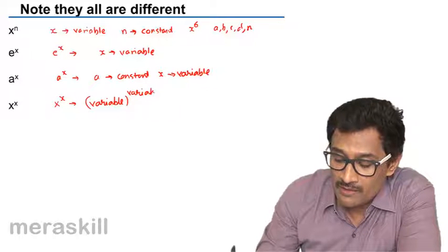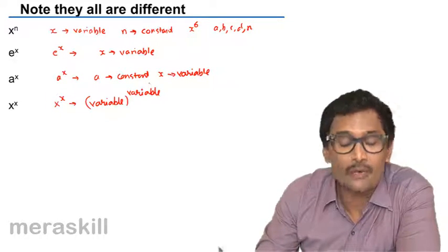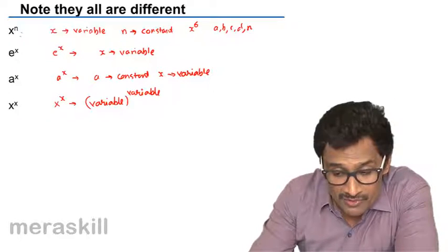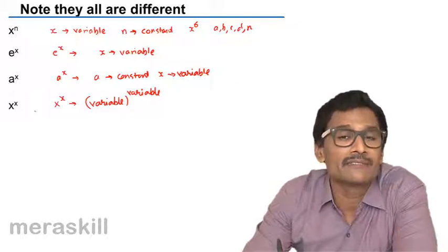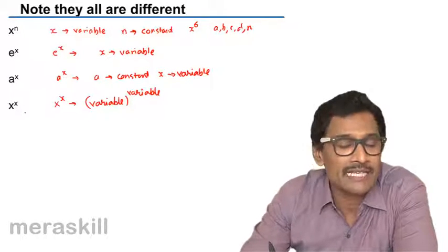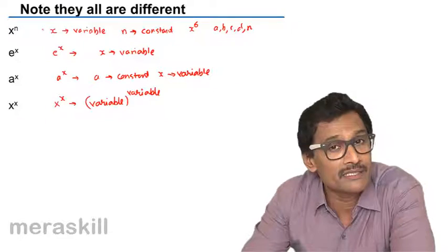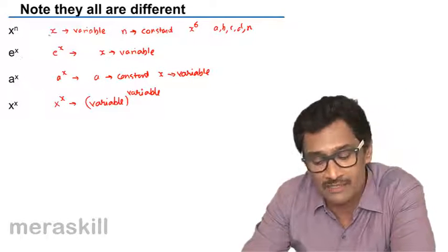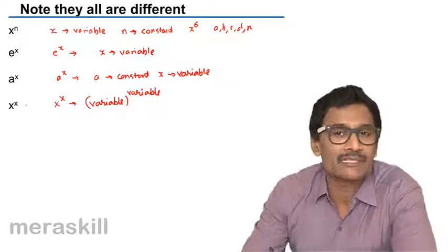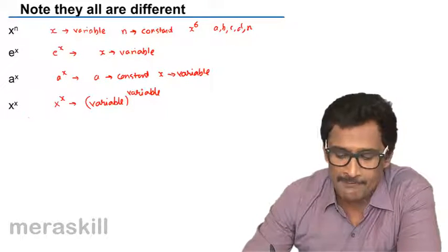Now each of them is filled with a huge lot of possibilities. So tackling each of these cases is very, very different from the way the other one is tackled. So x raised to n has a different formula. e raised to x has a different formula. a raised to x has a different formula. x raised to x has a different way of solving.